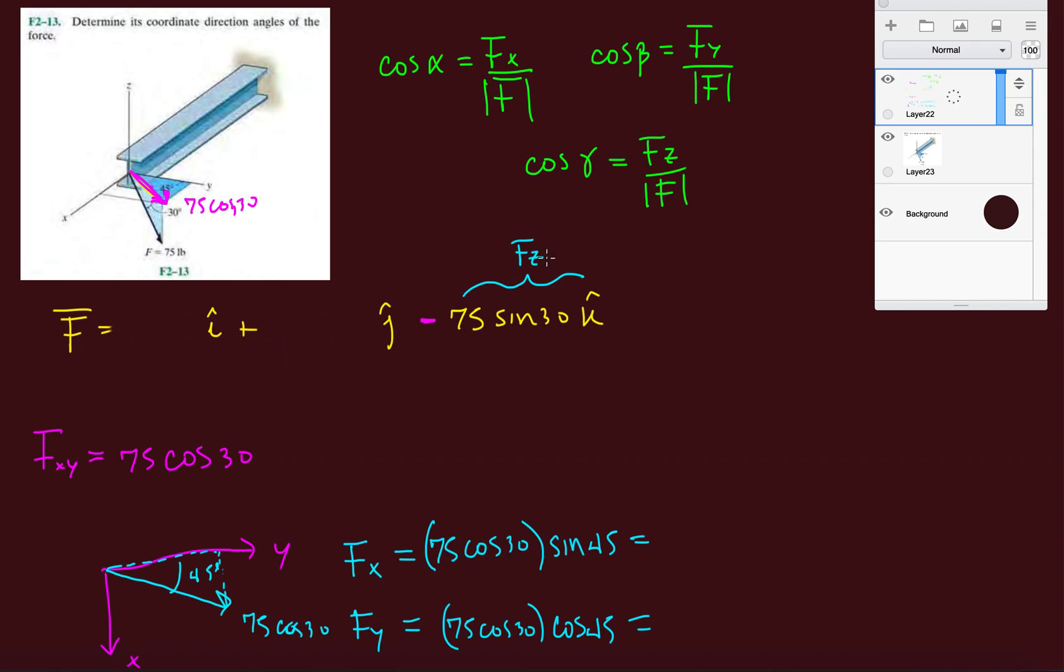75 times cosine 30 times sine 45. Here I have 45.9, and here I have 45.9. My components are going to be 45.9 i plus 45.9 j minus 75 sine 30, which should be 37.5 k.